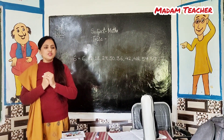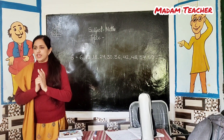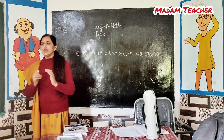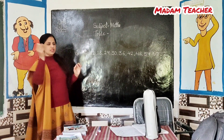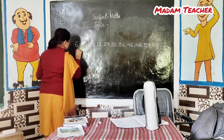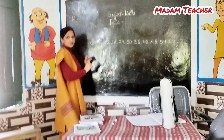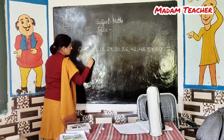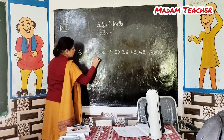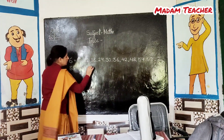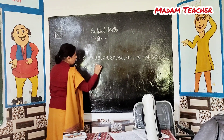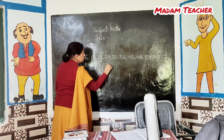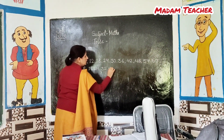Sit down. And who will speak the table of 8? You better stand up. Table of 8 — speak loudly. 8 ones are 8. 8 twos are 16. Very good. 8 threes are 24. 8 fours are 32. 8 fives are 40.